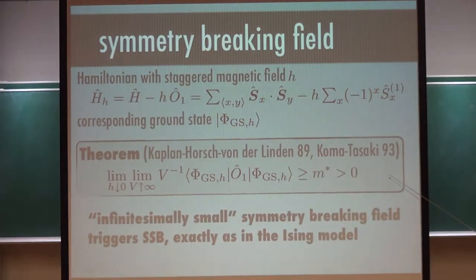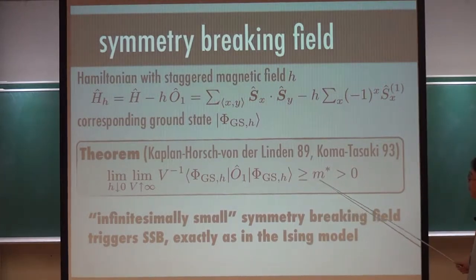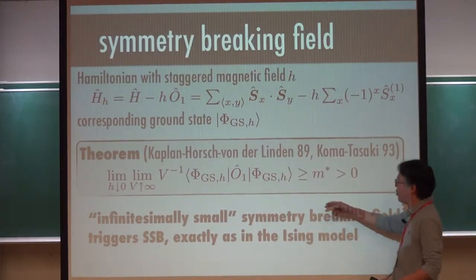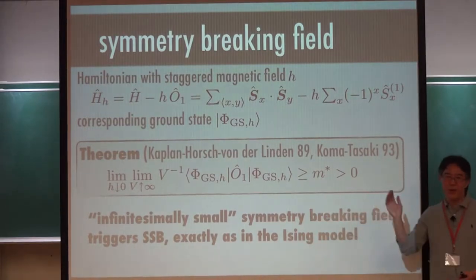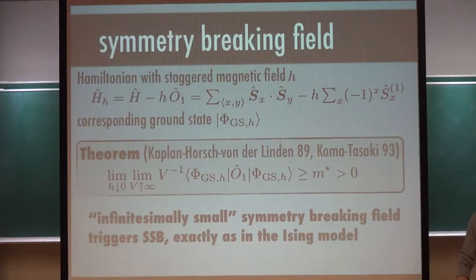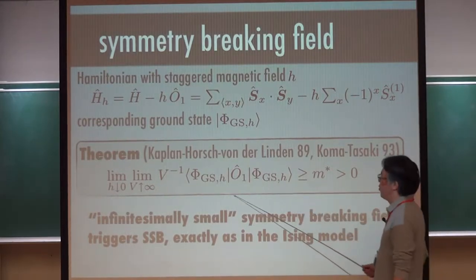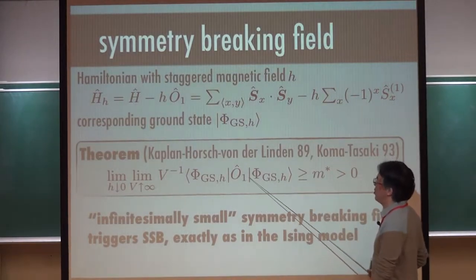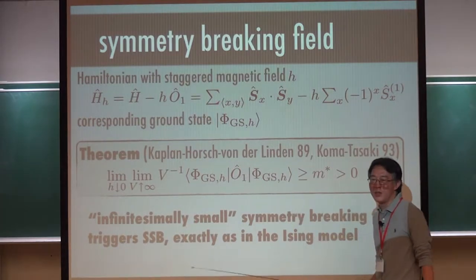So you first let V go to infinity and let H go to zero. My result is very partial. What I can prove is that this is greater than or equal to M star, and I strongly believe that this is equality, but we are still not able to prove it. We understand why it is so difficult. For this, I want to show that the fluctuation of O is small.